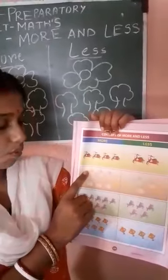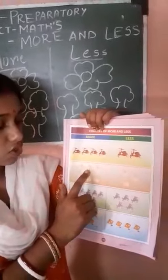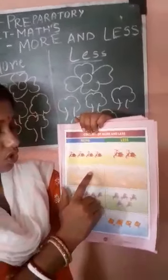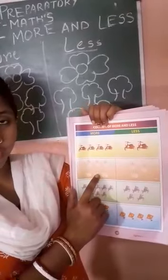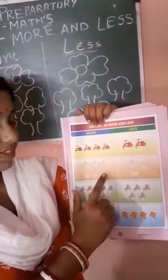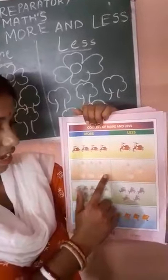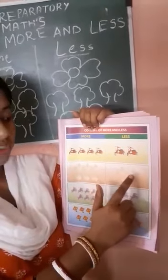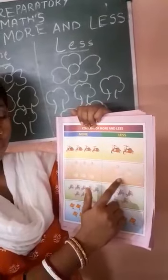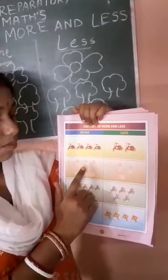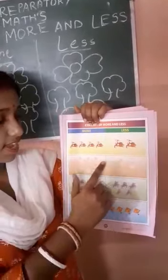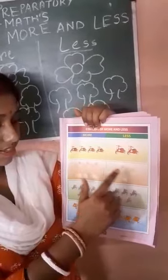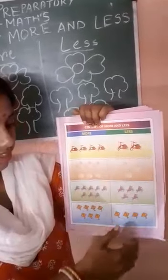Count after me: one, two, three, four, five, six. And here, one, two, three. So this is more than this — more than this.